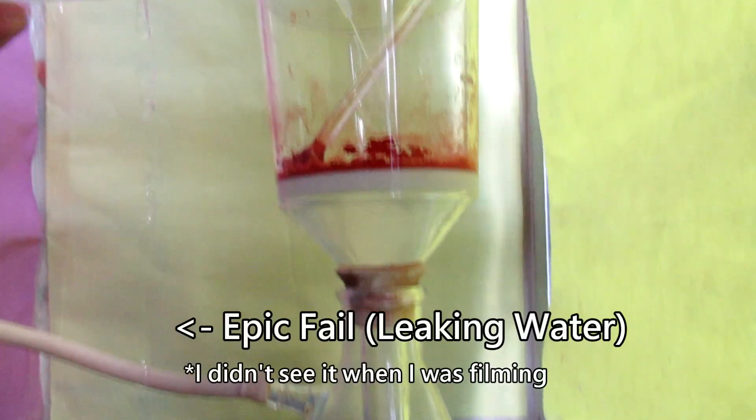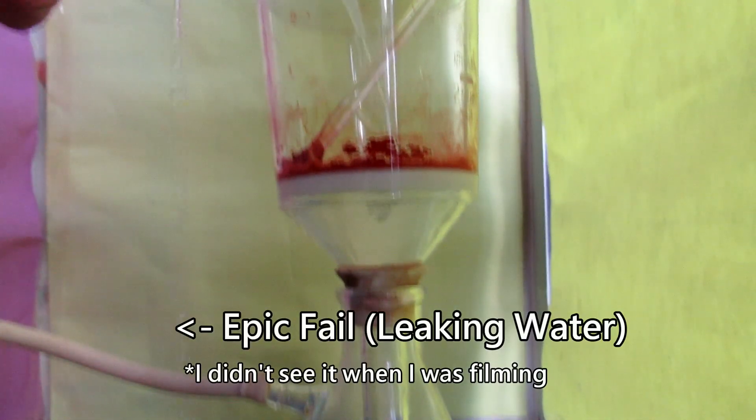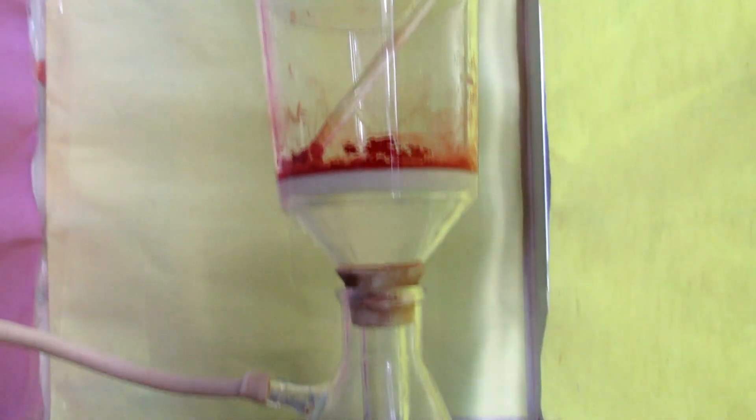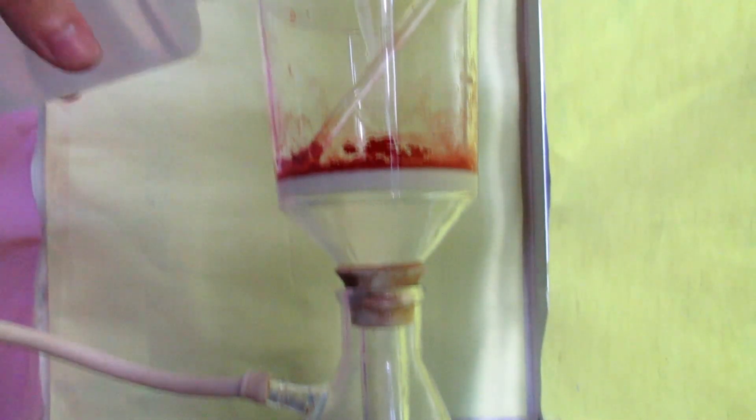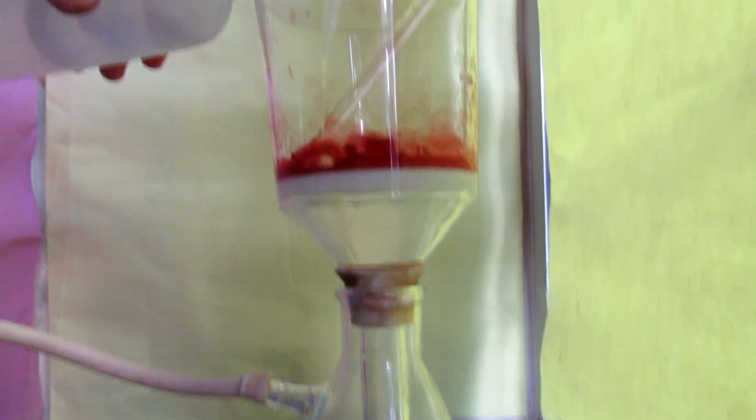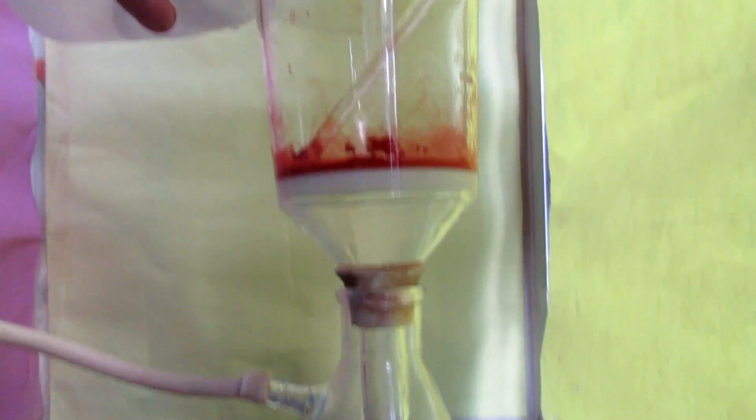After all the solution has been filtered through, I used some distilled water to wash the copper oxide to remove any soluble impurities like sodium, citrate, carbonate ions and sugar. Then, I left the vacuum on for a while to drive off as much water as possible. After that, I placed my copper oxide into a vacuum desiccator to further dry my product.